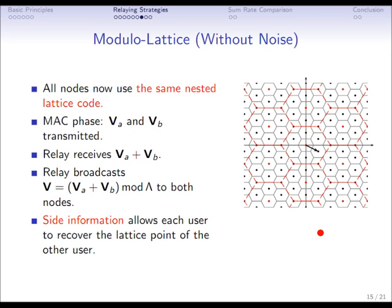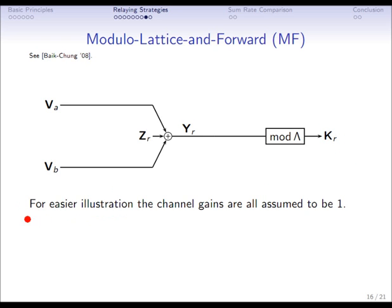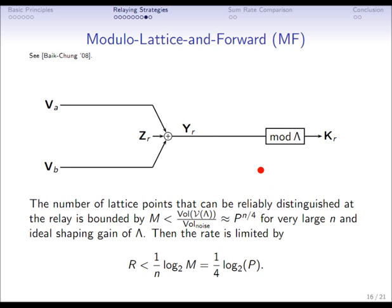Now we have to quantify this in terms of what rates are achievable. Going back to the block diagram, we have the two lattice points linearly superimposed. Reintroducing noise, K_R is the noisy superposition of the lattice points. I assume for now that the channel gains are equal and set to one. We can then make an argument about the number of lattice points reliably distinguishable at the relay: we divide the volume of the Voronoi region of the coarse (shaping) lattice by the volume of the noise spheres introduced by the additive noise.